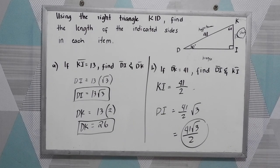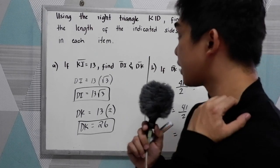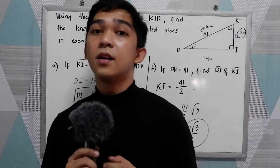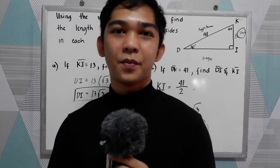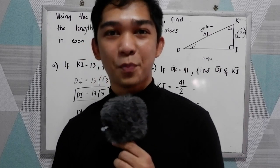So that is our 30, 60, 90 triangle theorem. Thank you for watching Senior Pablo TV.